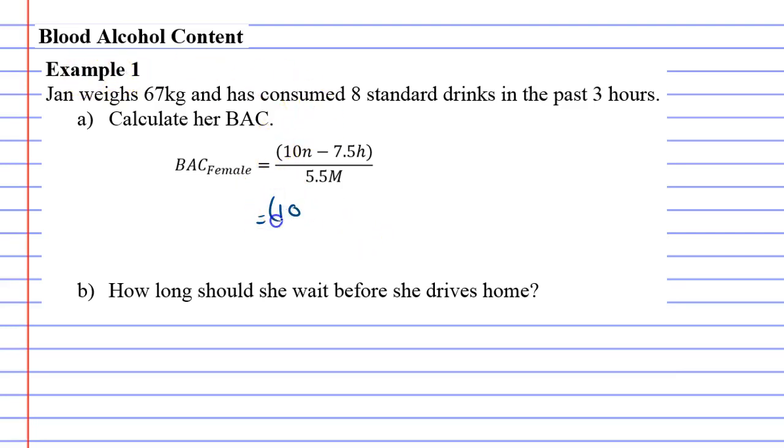Bracket ten times n, n is the number of drinks, so it's eight drinks minus 7.5 times number of hours which is 3. At the bottom of the fraction we're going to do 5.5 times m which is Jan's weight, 67 kilograms.